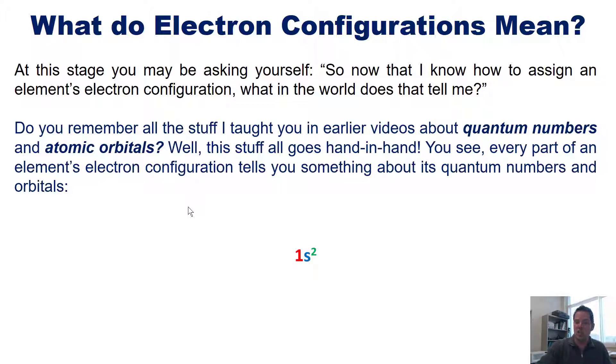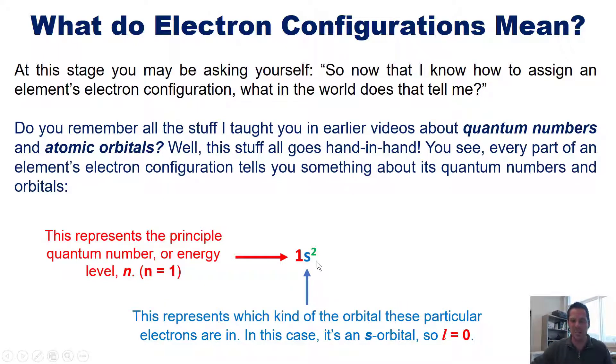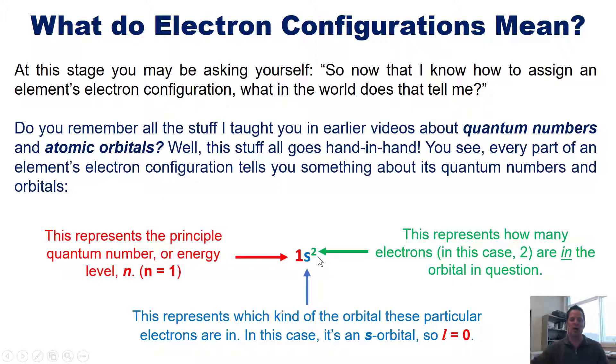For example, if I've got a 1s2 electron configuration, this red-colored 1 actually represents the principal quantum number, or energy level, or n number, for these electrons. In this case, n equals 1. So the electrons here in this S shell are at an energy, or n number level, of 1. Their principal quantum number. Now, in contrast, this blue-colored S here is what kind of orbital these two electrons are in. In this case, they're in an S orbital, which corresponds to an azimuthal number, or L number, of 0. Now, this green-colored 2 represents how many electrons, in this case 2, are actually in this S orbital. So all of these components of an electron configuration actually can be used to tell us something about those electrons' quantum numbers.